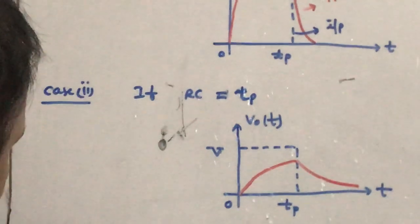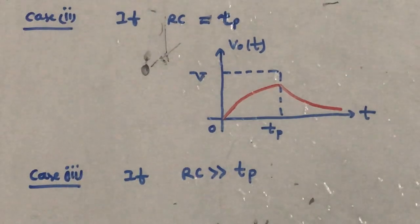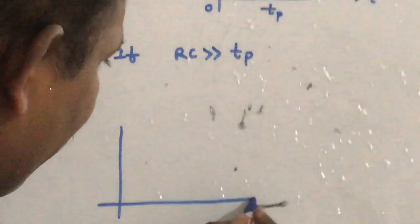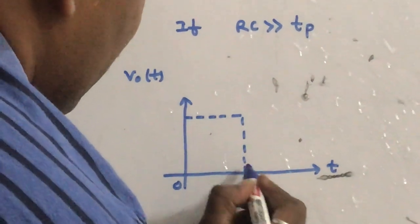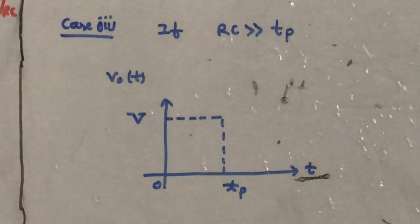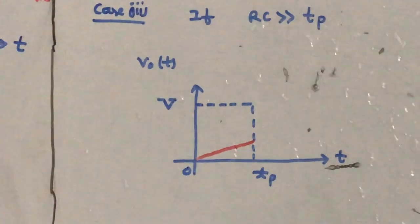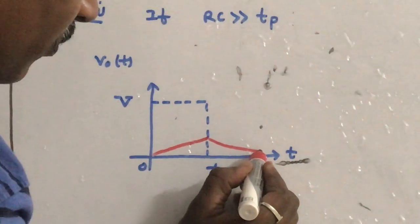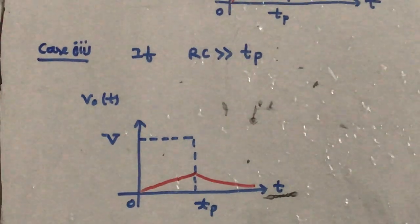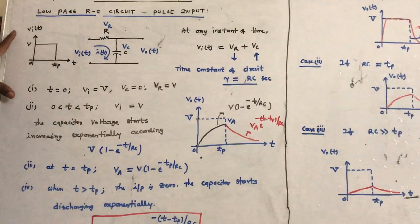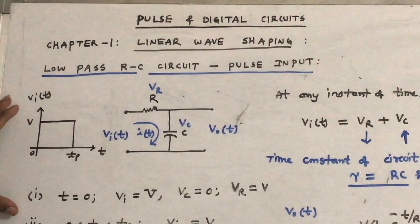Case 3: if the time constant RC is very very greater than the pulse duration Tp. Since the time constant is very large, by the time Tp the capacitor charges to only a very small voltage. After Tp the capacitor takes a lot of time to discharge. This is what you have to draw for the RC low pass circuit with pulse input — the output expression and output waveforms with different time constants. This is a very very important question in the examination. Thank you.